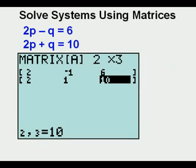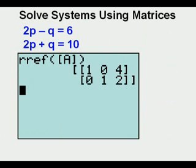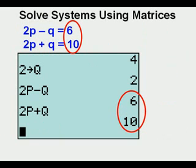Here's the equation entered in matrix form on the calculator. Note how the numbers are the same as those in the system of equations we're evaluating. And here it is in reduced row echelon form. The solution is P equals 4 and Q equals 2. Here's the completed check of the solution. We get 6 and 10 just like our original equations.